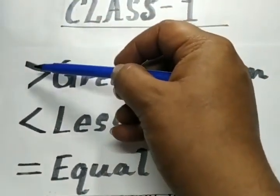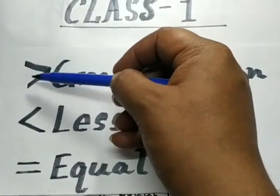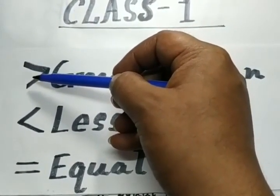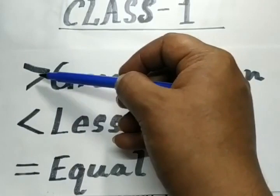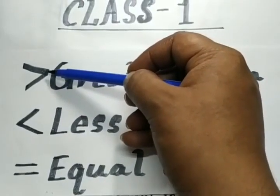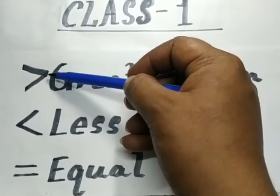The open side of the sign always faces towards the bigger number, and the pointed side always faces towards the smaller number.